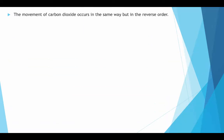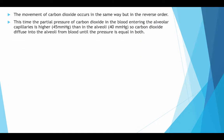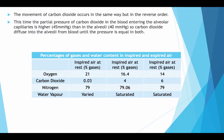The movement of carbon dioxide occurs in the same way but in reverse order. The partial pressure of carbon dioxide in the blood entering the alveoli capillaries is higher than in the alveoli, so carbon dioxide diffuses into the alveoli from the blood until the pressure is equal in both. As you can see from the table below, this breaks down the percentage of gases that are oxygen, carbon dioxide, nitrogen and water vapor.